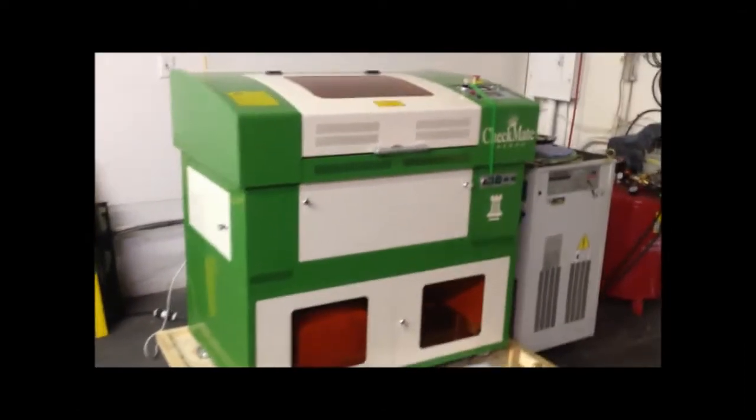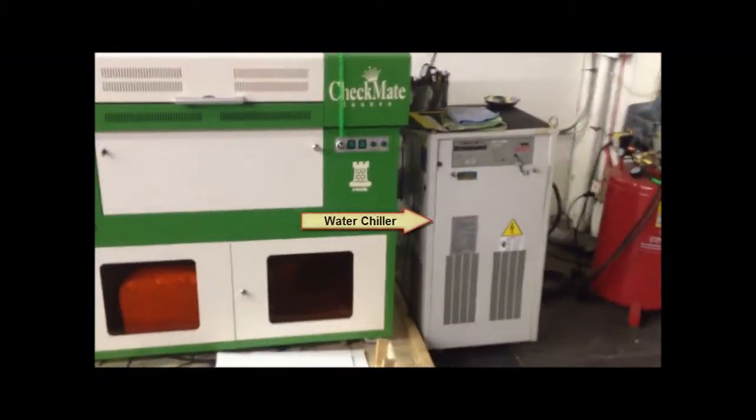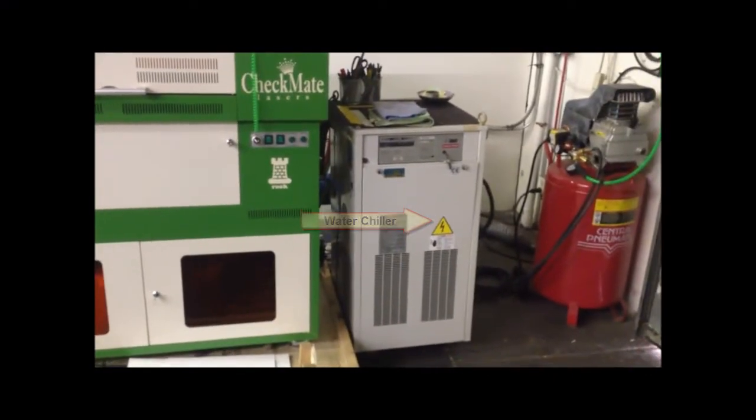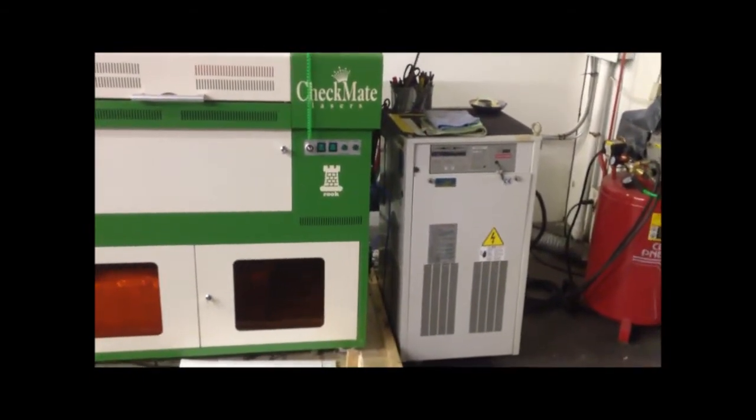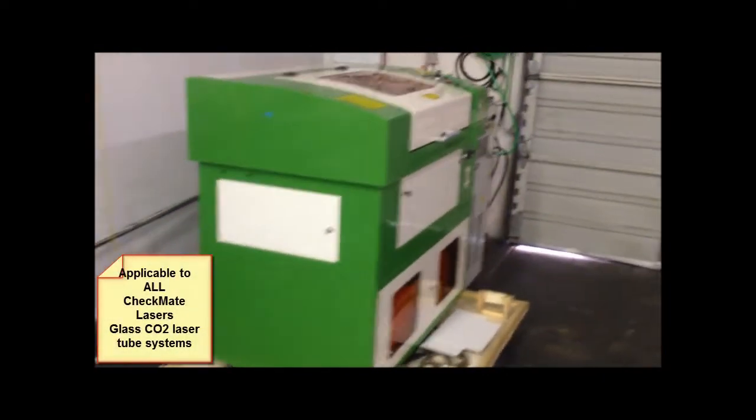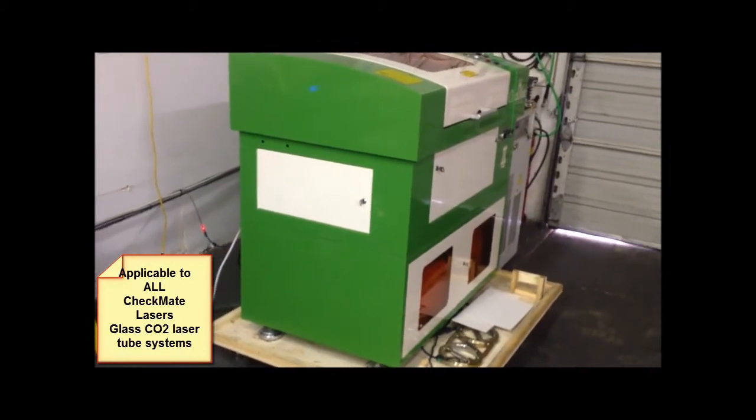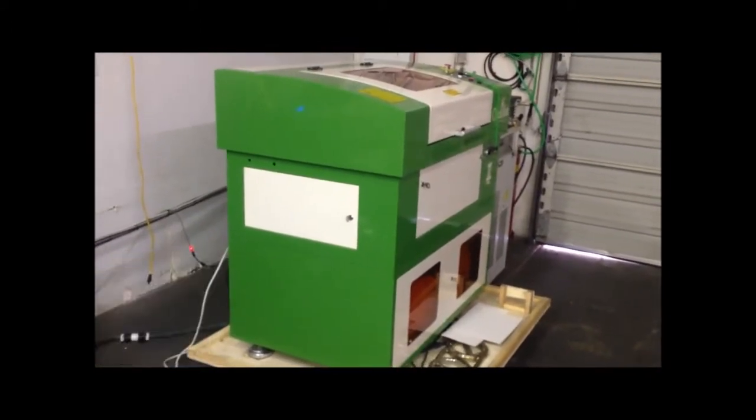Here we have a Checkmate Lasers Rook 50 watt laser engraving system next to my heavy duty industrial high-pressure water chiller. That's relevant to what I've done to my laser tube, but won't be necessary for most systems that we ship with the standard water chiller. The reason for this video is to show how easy and quick it is to swap out a laser tube on a Checkmate Laser system. Although this is a Rook, it's the same procedure on the Pawn, Knight, Bishop, Queen, King, even the Grandmaster series.